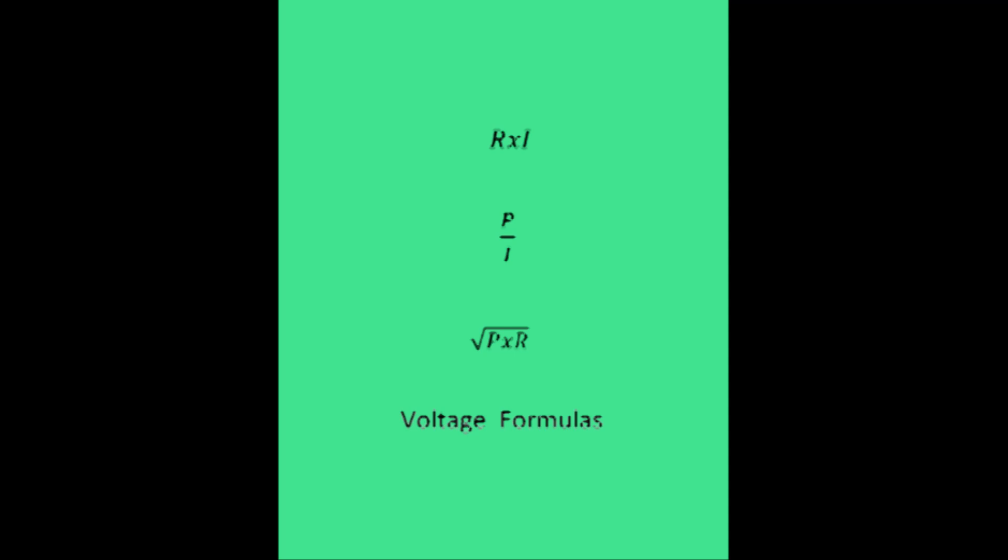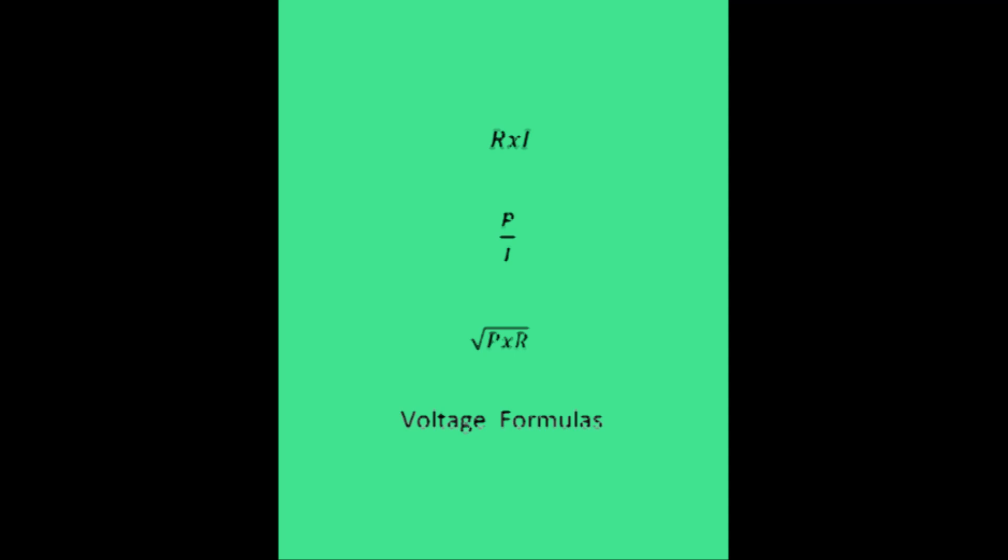Here are the three major volt formulas. We are going to employ the equation: the square root of watts multiplied by resistance is equal to voltage.